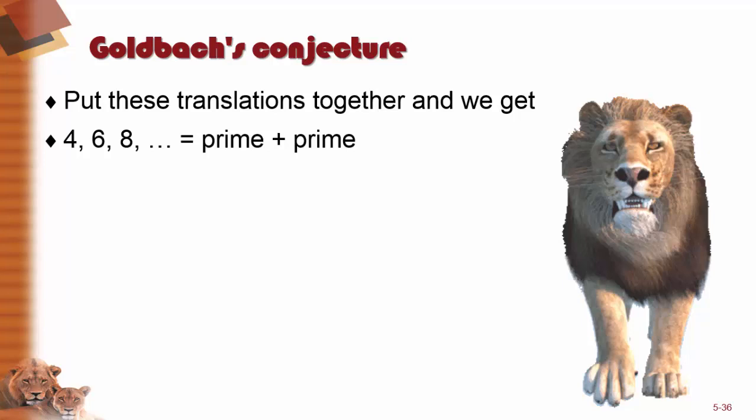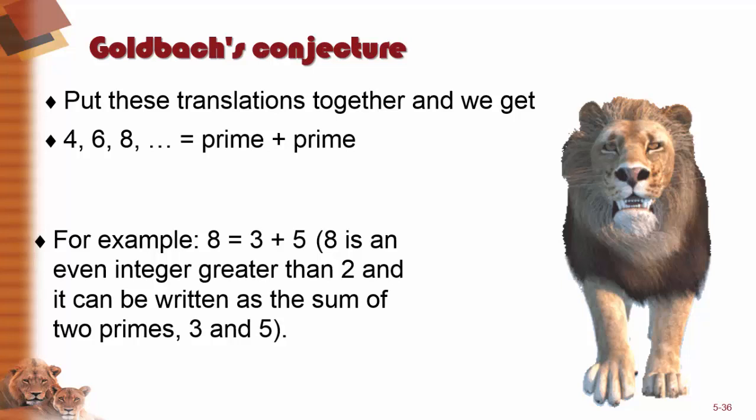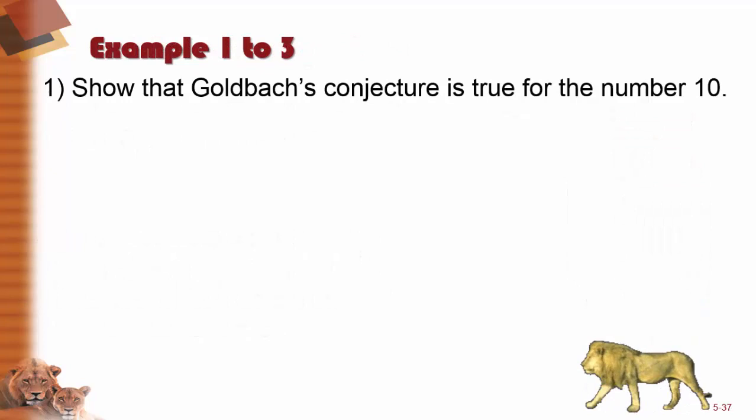We put these translations together to get 4, 6, 8, 10, 12, etc. to equal a prime plus a prime. For example, 8 is equal to 3 plus 5. 8 is an even number greater than 2 and it can be written as the sum of 2 primes, 3 and 5.